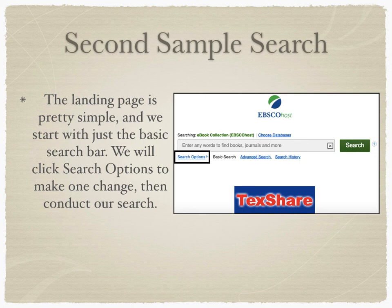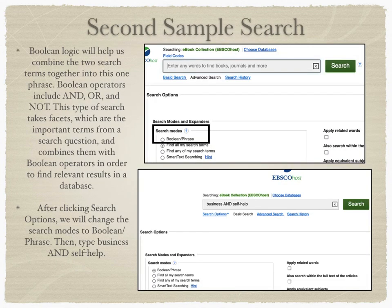The landing page is pretty simple, and we start with just the basic search bar. We will click Search Options to make one change, then conduct our search. Boolean logic will help us combine the two search terms together. Boolean operators include AND, OR, and NOT. This type of search takes facets — the important terms from a search question and possibly their synonyms — and combines them with Boolean operators to find relevant results in a database. After clicking Search Options, we will change the search mode to Boolean/phrase, then type 'business AND self-help.'